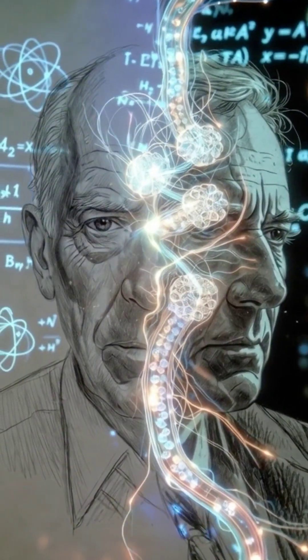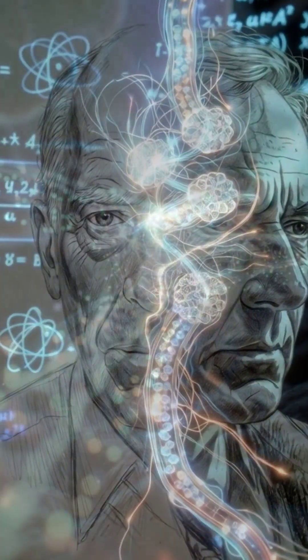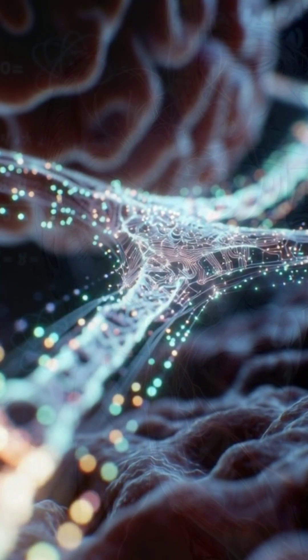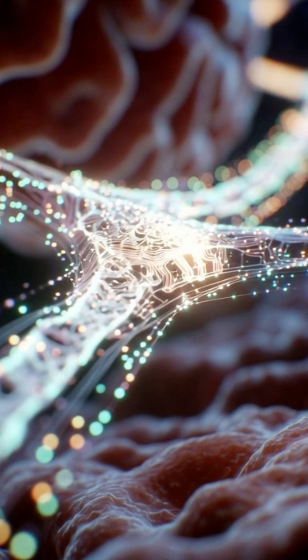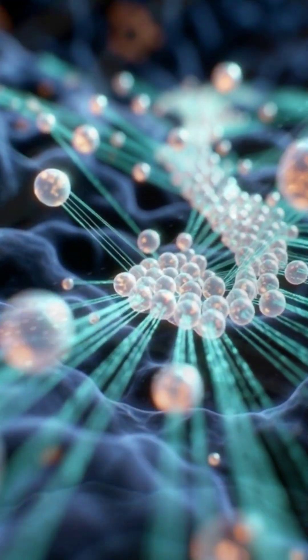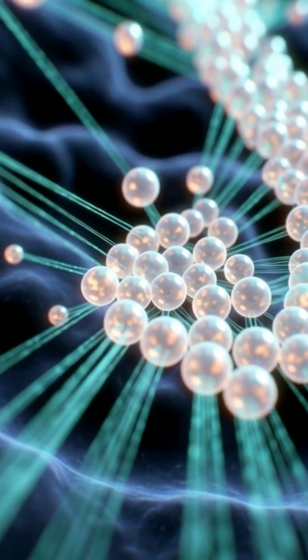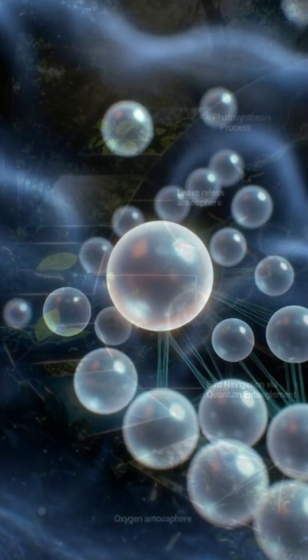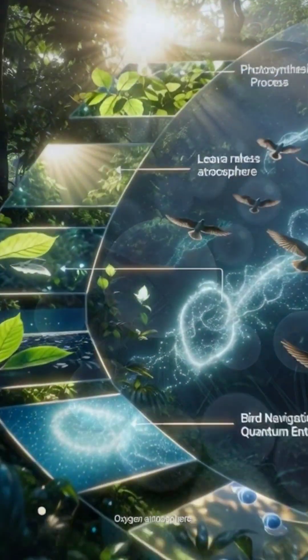The Orch model claims microtubules inside neurons can hold quantum states. These quantum processes may orchestrate our thoughts, creating awareness through wave function collapses.